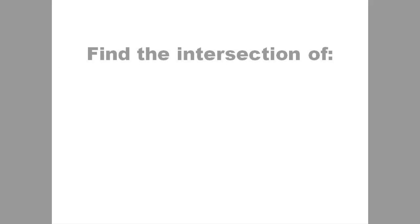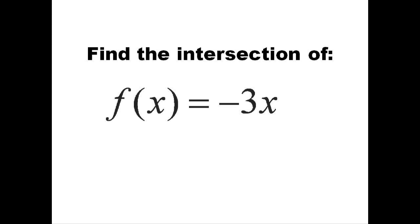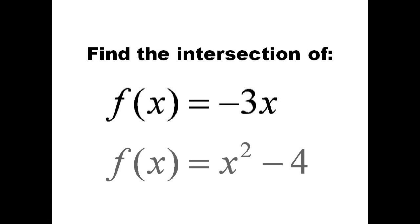In this lesson we're going to take a look at how to solve for the intersection of two functions using your graphing calculator. The two functions we'll use are f of x equals negative 3x and f of x equals x squared minus 4.